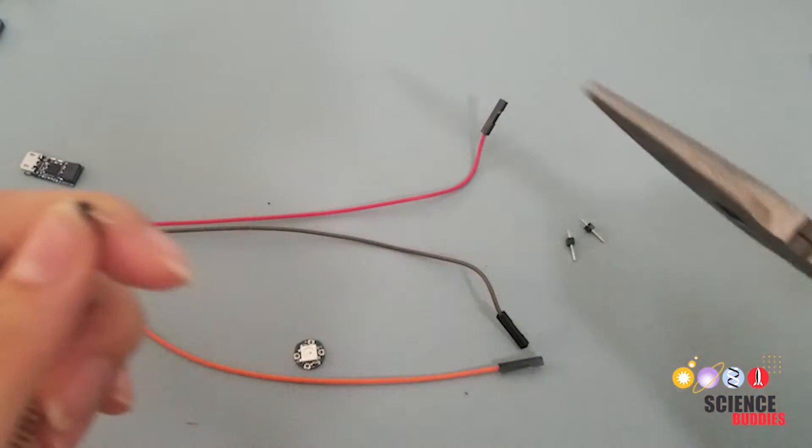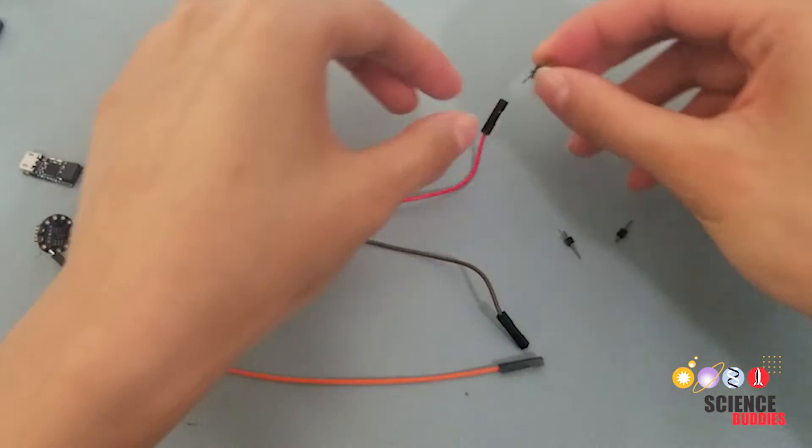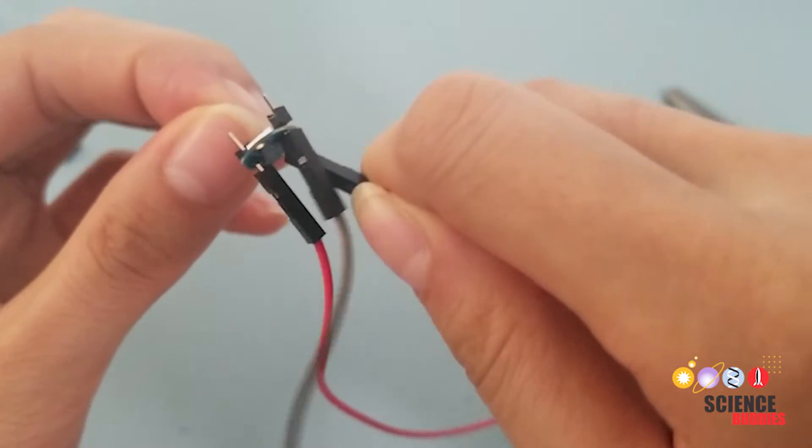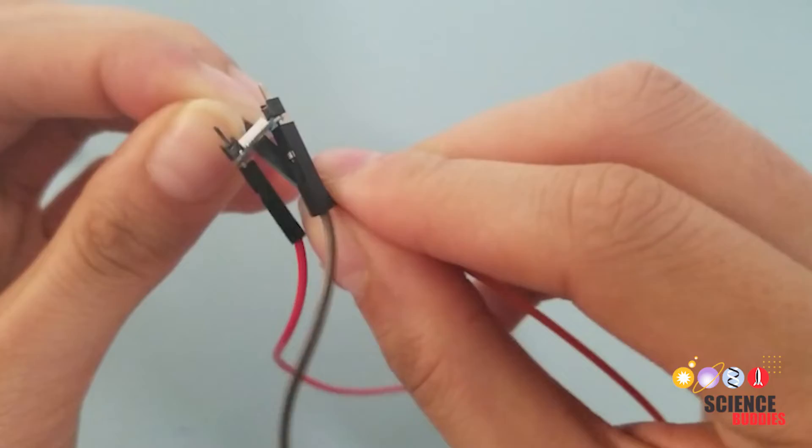To connect everything, use your jumper wires. Snap off the male breakaway header pins with your hands or needle-nose pliers. You can use these to secure the female-to-board connections like so.